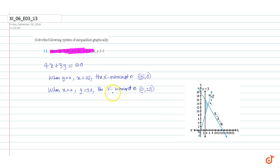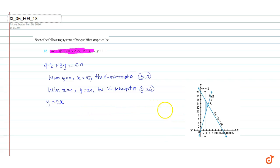Now we will consider the second inequality. The line represented by the second inequality is y equals 2x. This is a line through the origin with slope equal to 2. So we draw such a line through the origin with slope 2 and we get this line, y equals 2x.